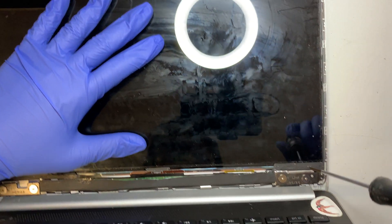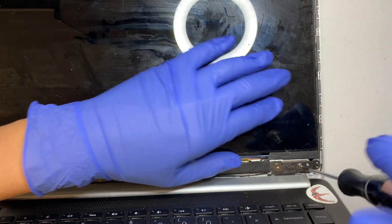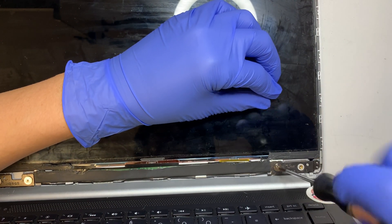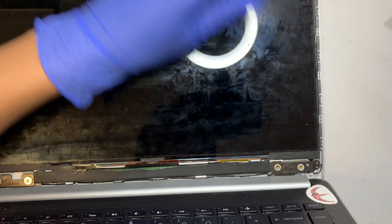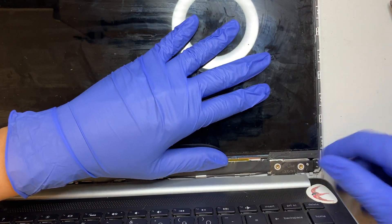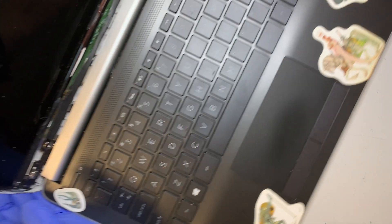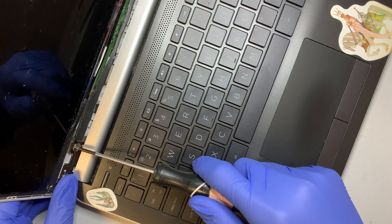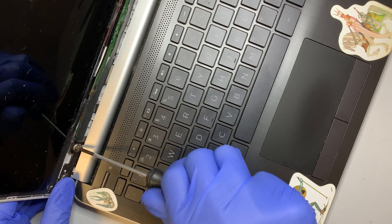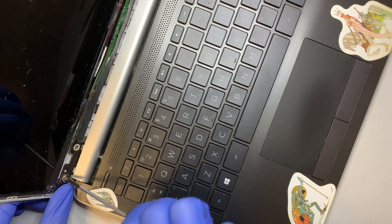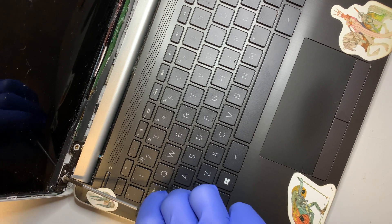It looks like we need to remove the two screws here. At the same time let me try to remove this screw as well. So I'm removing the two screws on both hinges.